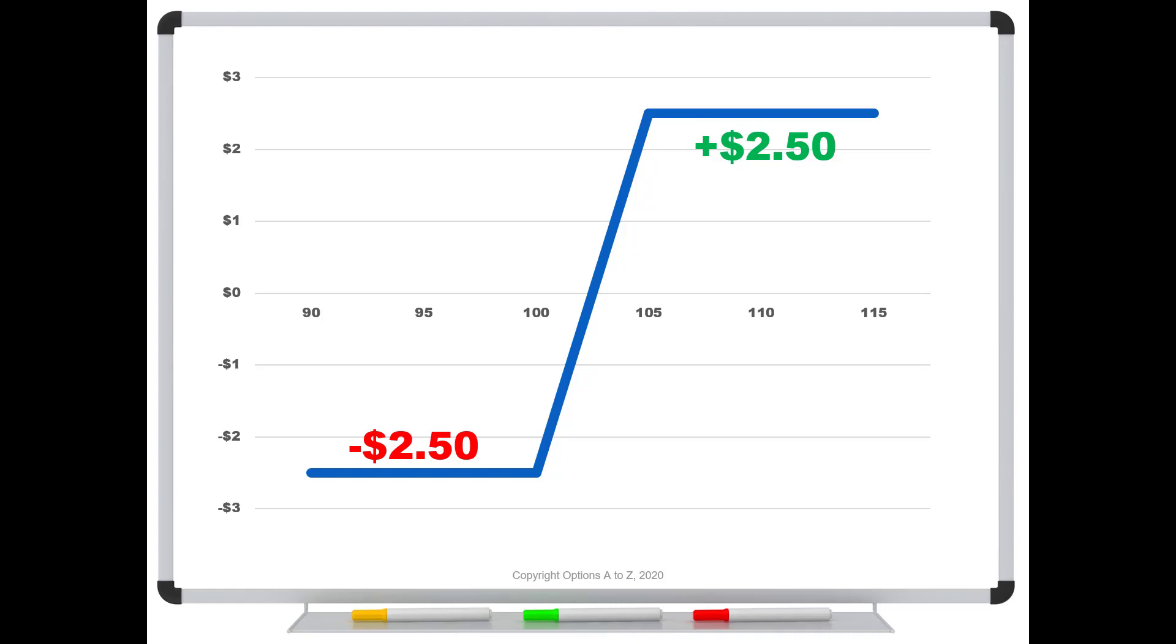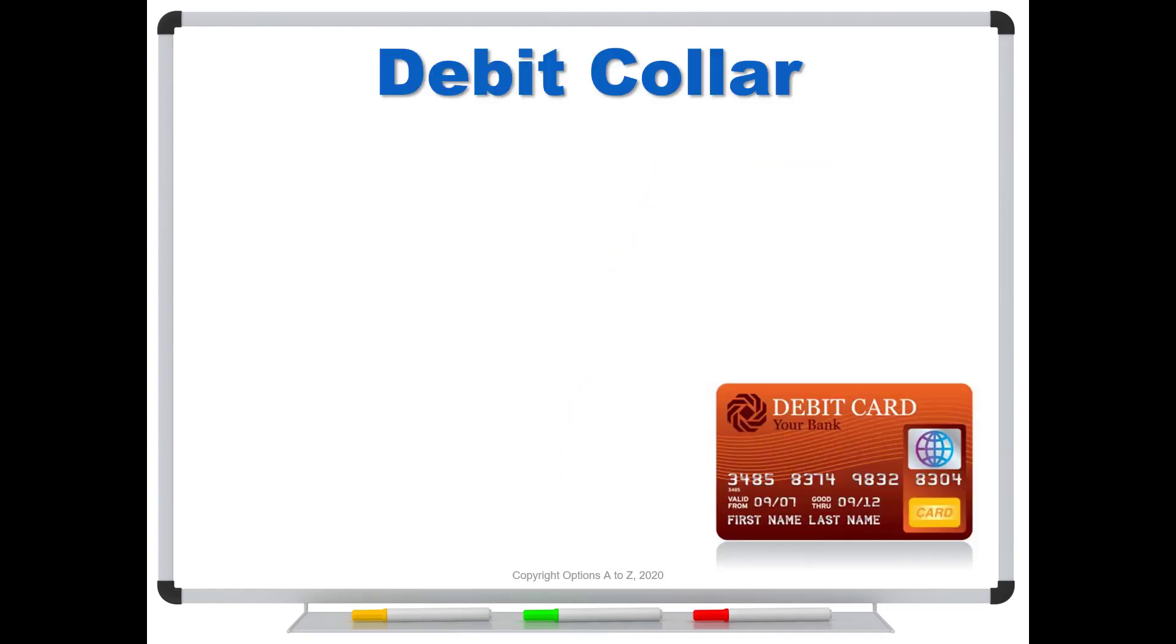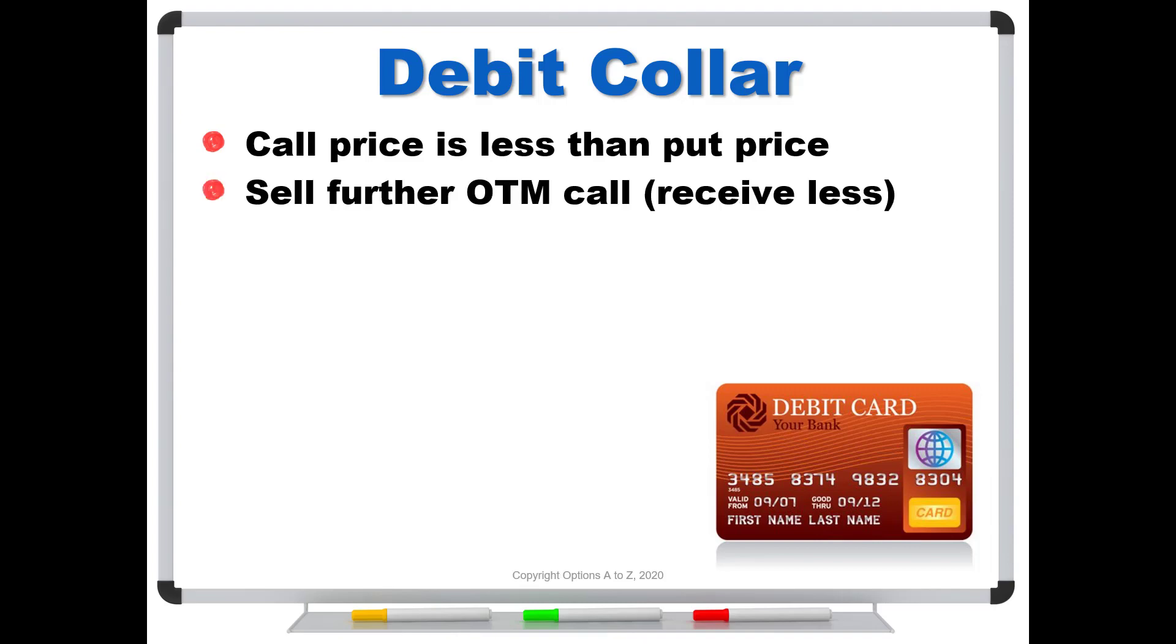What happens if we spend money for the collar? Does that mean it's worse? Here's a debit collar. The only way you end up with a debit collar is that your call price is less than the put price. There's a few ways we can do this: I can either sell a further out-of-the-money call—receive less money—or I could buy a closer to at-the-money put, increase that put strike, and therefore pay more money.